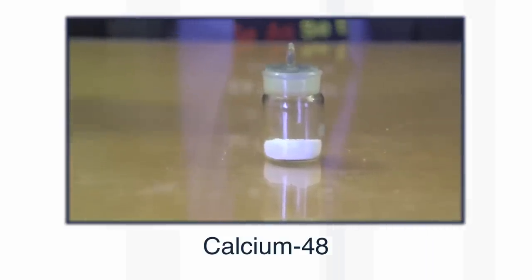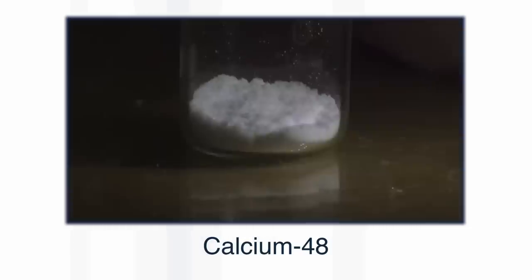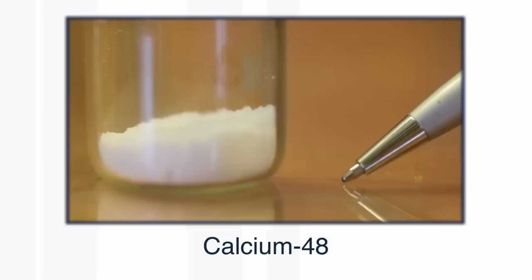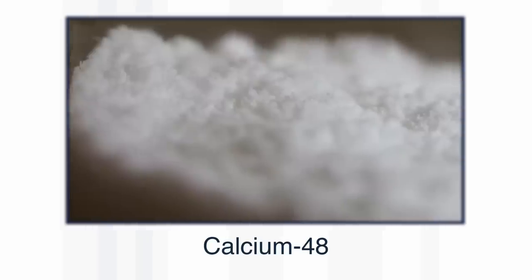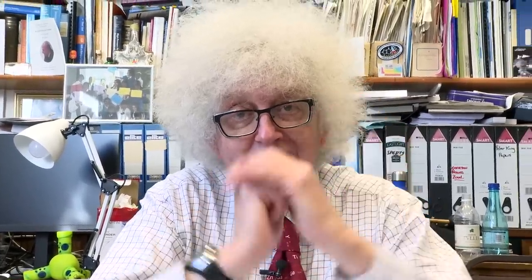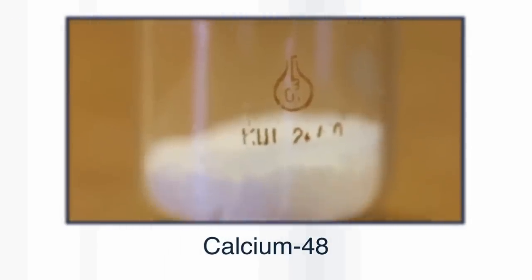Some of you will remember that we had a video about this very unusual isotope of calcium, called calcium-48, that has 28 neutrons, that is particularly stable, and can be used for synthesising all sorts of super heavy elements. I was shown a bottle of calcium-48. It was too valuable for them to allow me to touch it with my shaking hands. But Brady managed to video it.